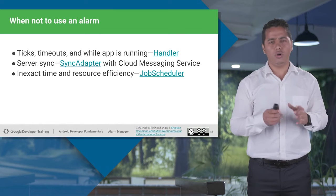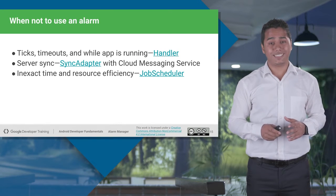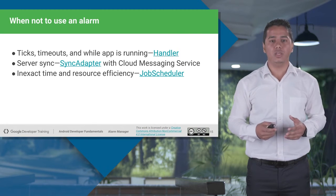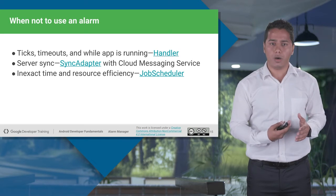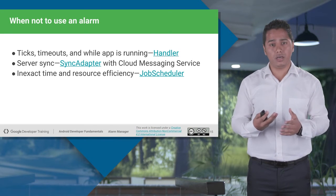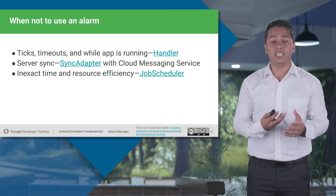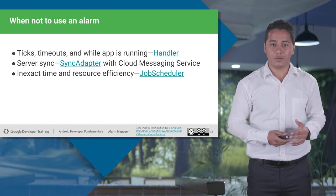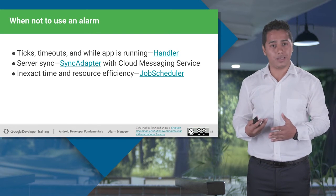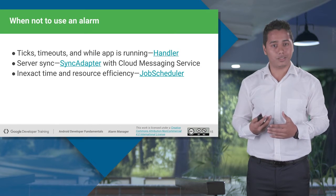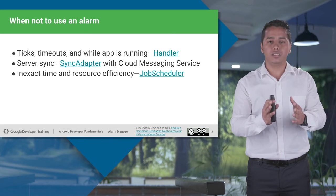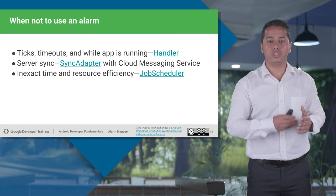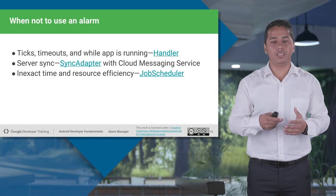When exactly do you not want to use an alarm? Whenever it's draining your battery or taking too many resources. For example, when your app is running and you want to update a progress bar — that's a UI thing — it could have been easily handled using AsyncTask. If you want to update a cloud messaging service, use sync adapter classes — that would be better than using alarm manager. Or for inexact time, there is a more efficient way called job scheduler. We're going to learn about this in our next session.